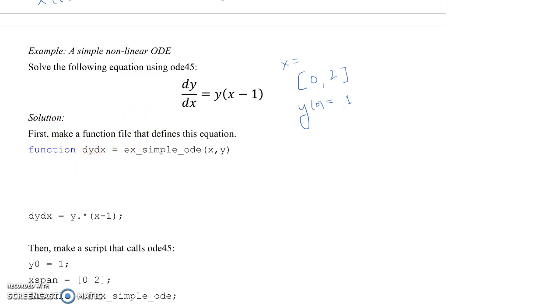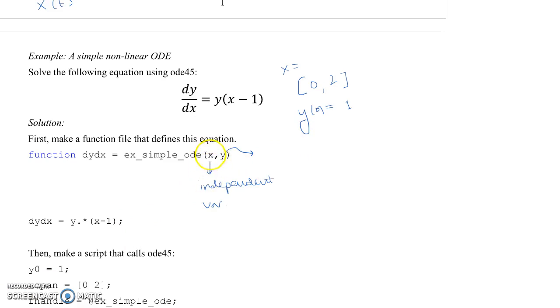To use ODE45 to do this, the first thing we have to do is make a function. In this case, we're calling it example simple ODE. The output is dy dx, that's our derivative. And the two inputs are our independent variable, which in this case is X, and the second input is our dependent variable, which in this case we called it Y. In this case, our dependent variable is a scalar. I was talking about it as a vector before, but since we're solving only one ODE in this case instead of a system of ODEs, Y is a scalar. And of course, as I said before, the output is the derivative.